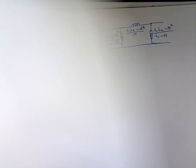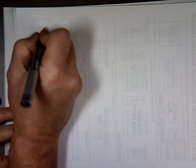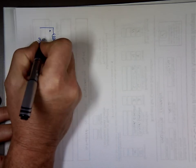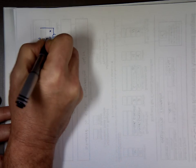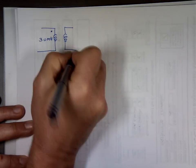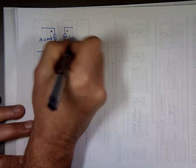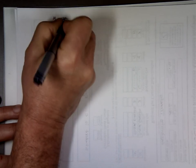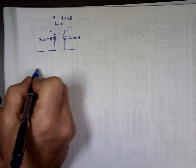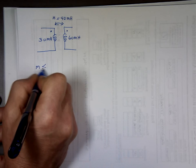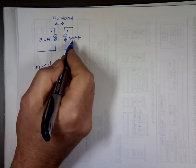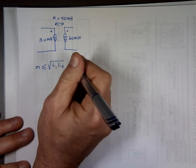Here we go. And this is 30 mHenry. And this is 60 mHenry. And let's say the mutual inductance M is 40 mHenry. Remember, the value of M. The value of M is always going to be less than or equal to the square root of L1 times L2. So, it could be larger than this, but it can't be larger than this one.